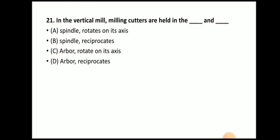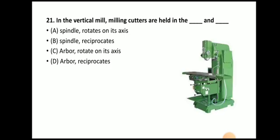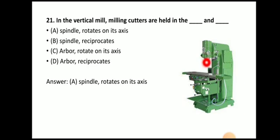Next question: in vertical milling, milling cutters are held in — the answer is the spindle, and rotate on their axis. Here you can see the spindle of the vertical milling machine where you attach the milling cutter. The milling cutter is held in the spindle and rotates along its own axis.